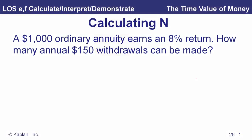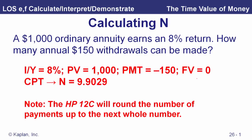One more example on calculating N: a $1,000 ordinary annuity earns an 8% return. How many annual $150 withdrawals can be made? PV is $1,000, payment is -$150, I/Y is 8%, and FV is 0 — once the last $150 payment is made, that's it. We compute N and get 9.9029, so just about 10 periods.